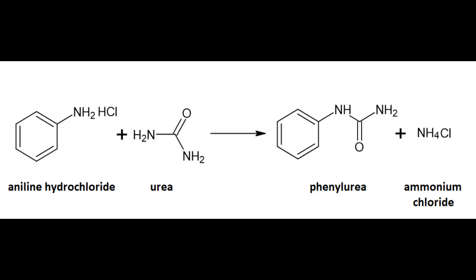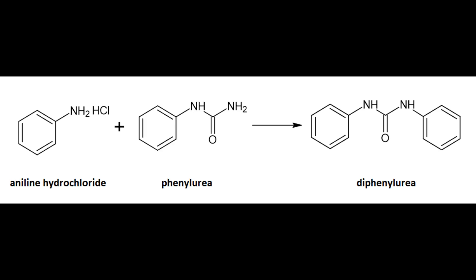To obtain phenylurea and diphenylurea, aniline hydrochloride must first be obtained and reacted with urea. In the reaction, phenylurea is formed first, and part of the phenylurea reacts with one mole of aniline hydrochloride to form diphenylurea. Diphenylurea is isolated first because it is insoluble in hot water.